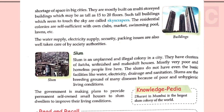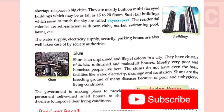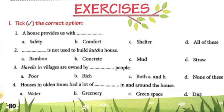Before we move on to the comprehension part, I request all my students to subscribe to the channel so that you keep getting notifications of upcoming tutorials. Let's move on to the comprehension part of this chapter. First question: tick the correct option. For each question there are four options and we have to tick the correct option and write the same in the given blank.